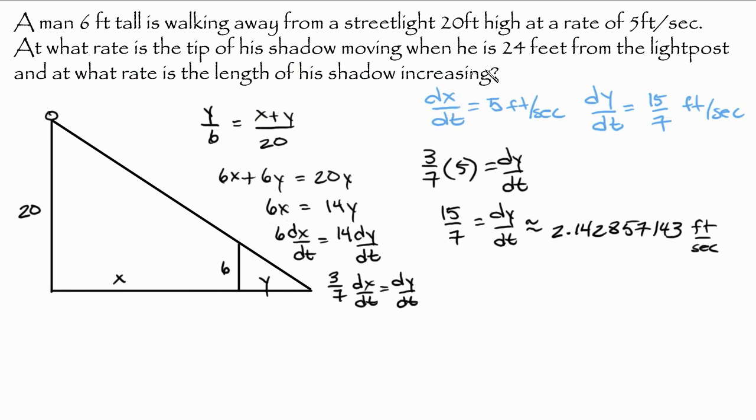So the last part here, actually what I did is I answered the second part. At what rate is the length of the shadow increasing? We found that. At what rate is the tip of his shadow moving when he is 24 feet from the light post? Again, since we're dealing with a linear equation, we actually don't use that number. So basically what you do is you have this movement here and you have this movement here. And as the guy walks away, his shadow is increasing. So as x is increasing, y is increasing.